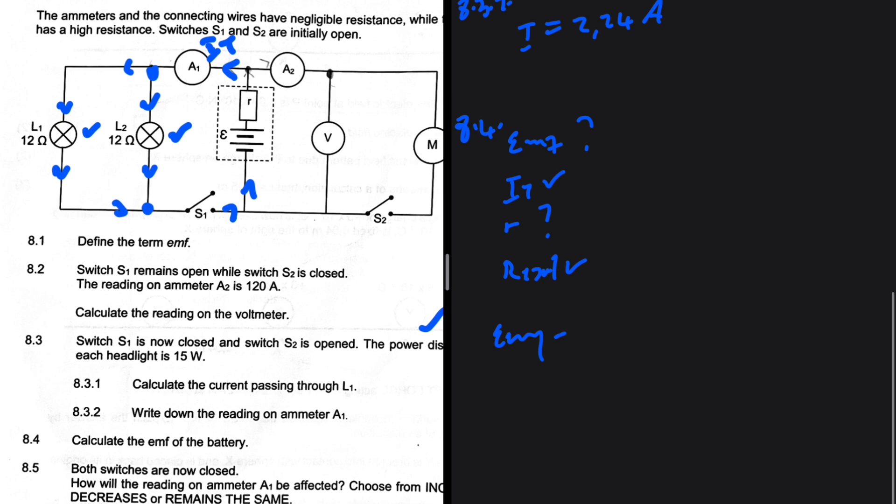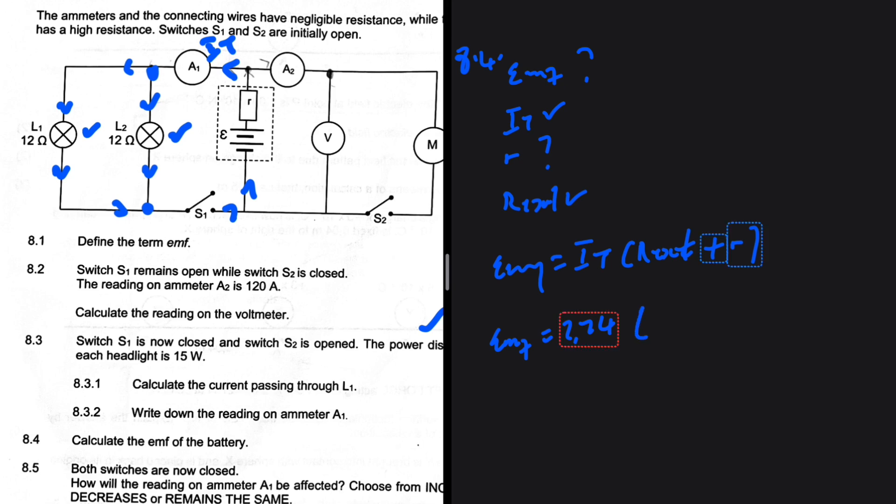Emf is equal to I_total over R external plus R internal. So the emf, which is unknown, will be I_total. I_total is 2.24, right? So 2.24.